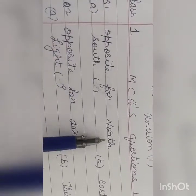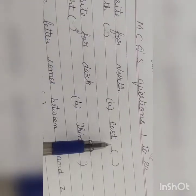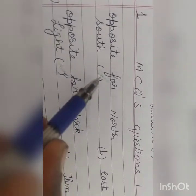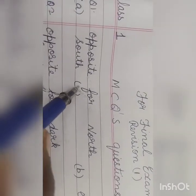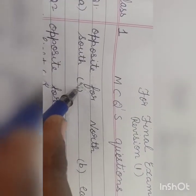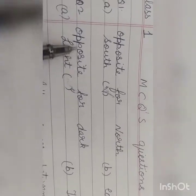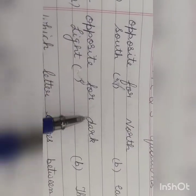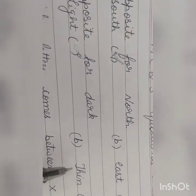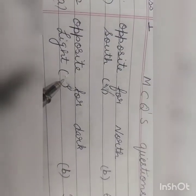Opposite for North: South, East. So what is the opposite for North? South, so we will put a tick mark on South. Now see the second one, opposite for Dark: Light, Thin. What is the opposite for Dark children? Light, so put a tick mark on Light.